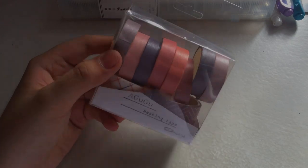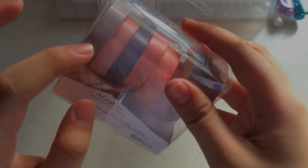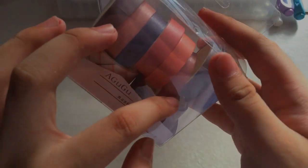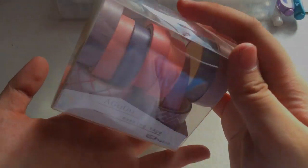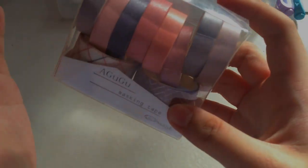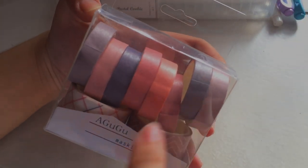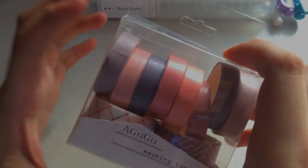Next I got this one, this is another washi set. So this is a 10 set washi tape. It's really cheap, I think this is 1 point something USD, and the colors are so pretty. This is actually the color that I really like on my planners.